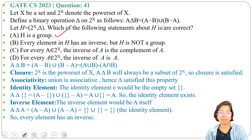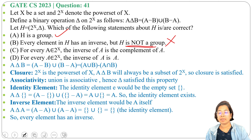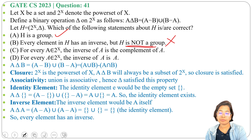Option B: every element in H has an inverse but H is not a group. While every element of H does have an inverse, the statement says H is not a group — that makes it false. H is a group because it satisfies closure, associativity, identity, and inverse. So option B is false.